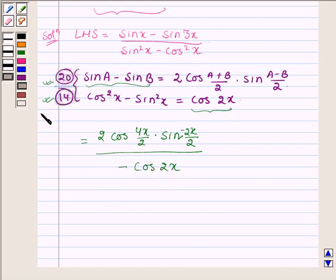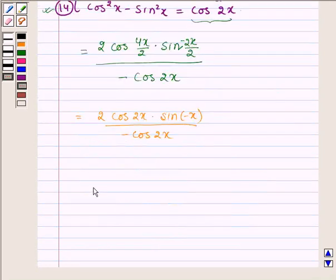Which is further equal to 2 cos 2x into sin of minus x upon minus cos 2x. Now sin of minus x can be written as minus sin x, so we have minus 2 cos 2x into sin x upon minus cos 2x.